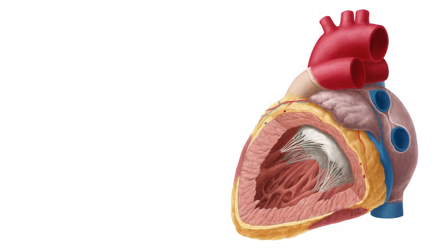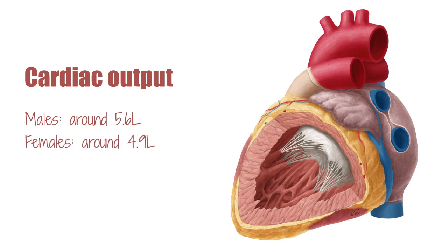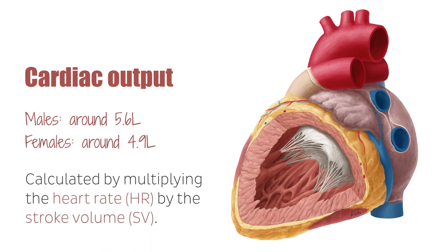The amount of blood in liters that is pumped out of the heart per minute is known as the cardiac output, which is around 5.6 liters in males and 4.9 liters in females. It can be calculated by multiplying the heart rate, which is the number of beats per minute, by the stroke volume, which is the amount of blood that collects in the ventricles when they are at full capacity and about to contract. The cardiac output varies depending on whether the person is exercising or resting.